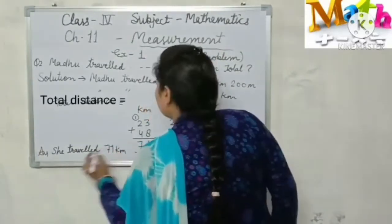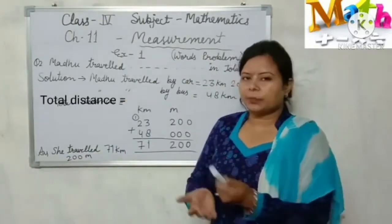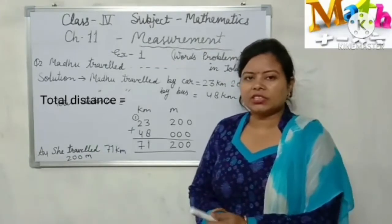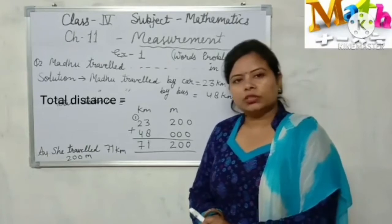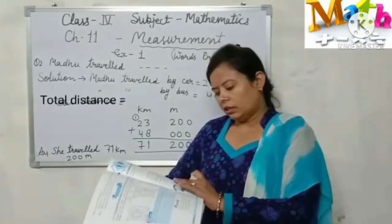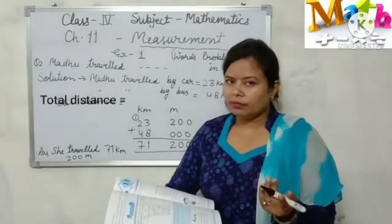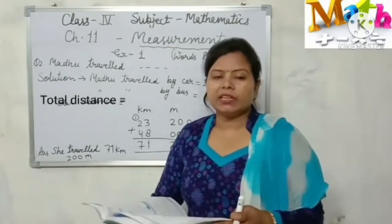and 200 meter. My dear student, next question is subtraction. Same way, you will do subtraction. Write it in proper columns, then you subtract. Question number three, same as question number one, do it in your notebook. Now open page number 112.